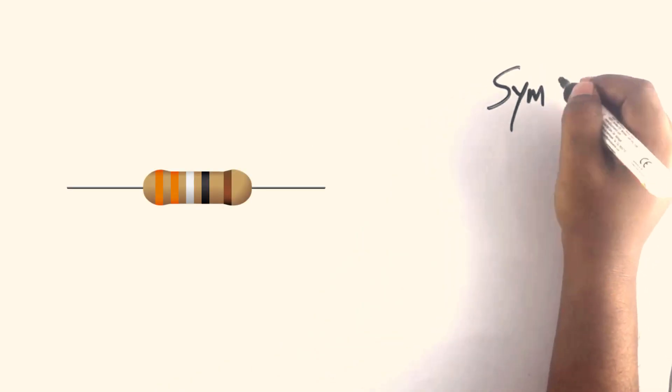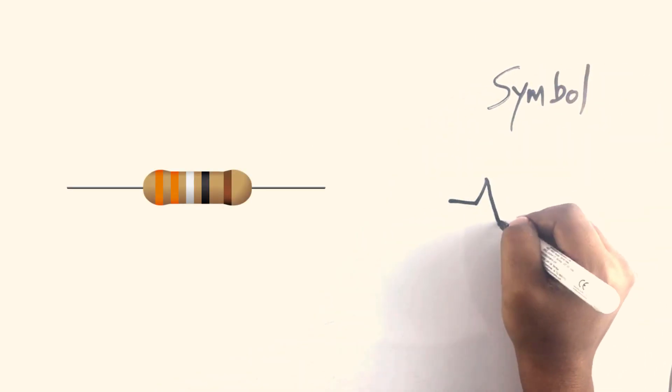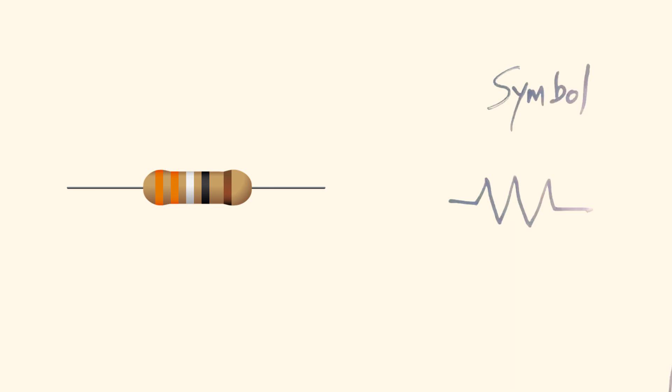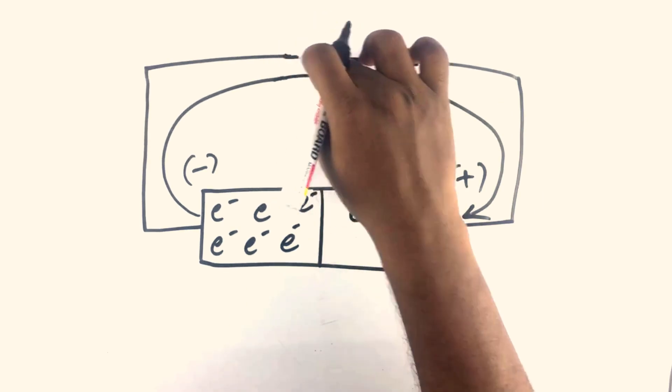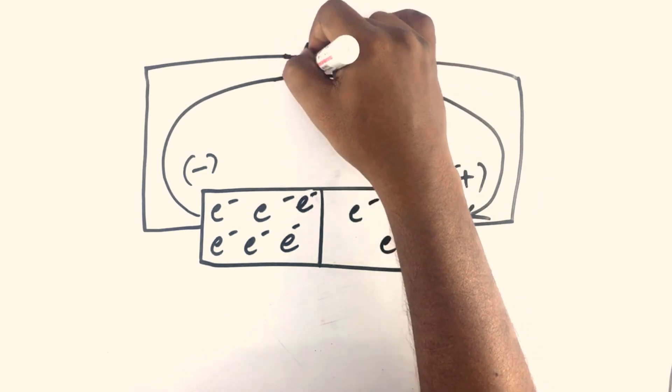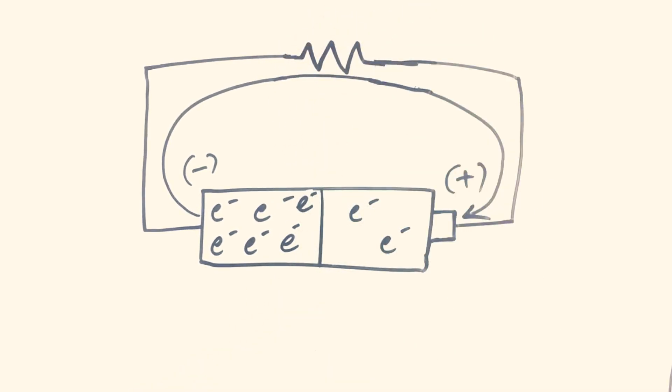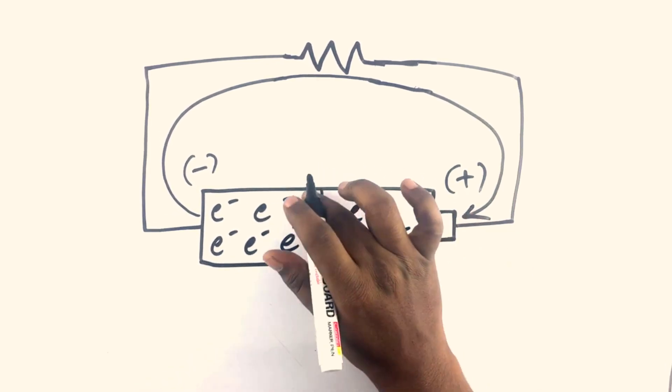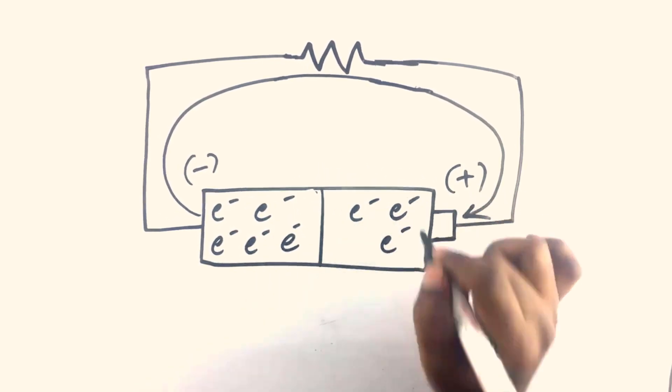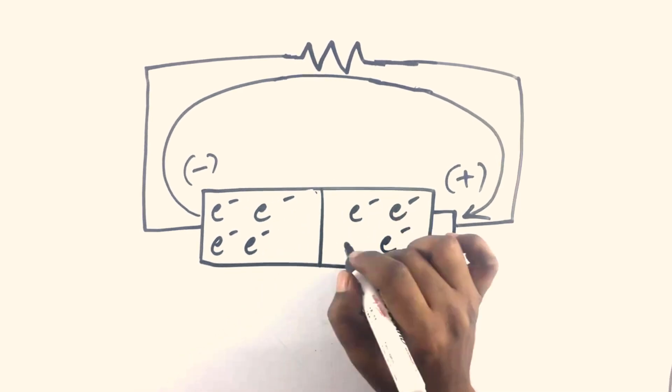Same here. Usually a special component is used to provide resistance called resistor which we will cover in the next episode. They resist the flow of current by some amount depending on the value of resistor. These resistances slow down the flow of electrons resulting in less number of electrons flowing through the wire, reducing the current.